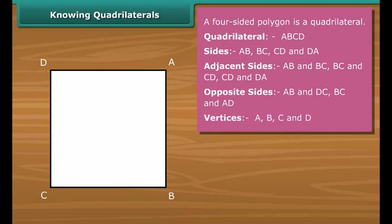The four vertices of quadrilateral ABCD are A, B, C and D. Among them A and C, B and D are opposite vertices.